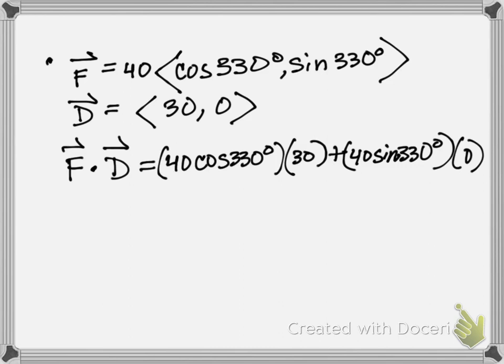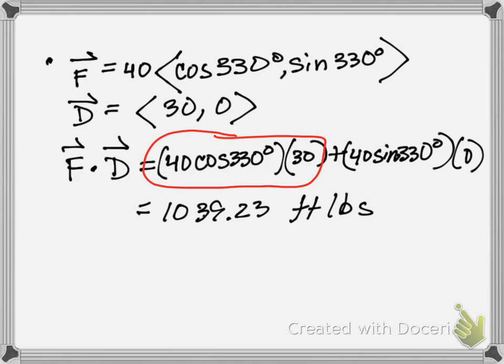So there it is, 40 cosine 330 times 30, and that's going to give me a value. Let me check on that value. That's 1039.23. The units, if you're in physics, you want the units maybe to be joules, but we are operating in feet and pounds. We're not operating with scientific measurements of newtons and meters, so it's actually 1039.23 foot-pounds, and that's the work that's done.